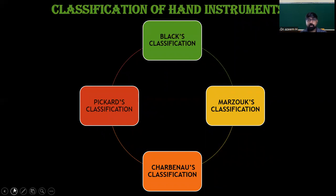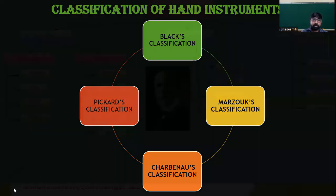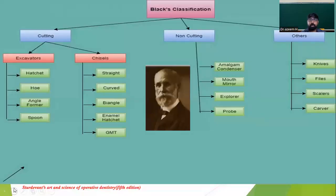Coming to the classification of hand instruments, there are various classifications by Black, Marzouk, Cherbenu, and Picard. JV Black classified hand instruments into cutting instruments, non-cutting instruments, and other instruments. In cutting instruments we have excavators and chisels. In excavators: ordinary hatchet, hoe, angle former, and spoon excavator. In chisels: straight chisel, curved chisel, bin-angle chisel, and special chisels like enamel hatchet and gingival marginal trimmer. In non-cutting instruments: amalgam condenser, mouth mirror, explorer, probe. Other instruments include knives, files, scalers, and carvers.